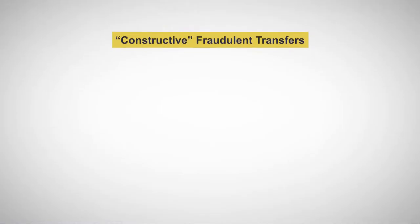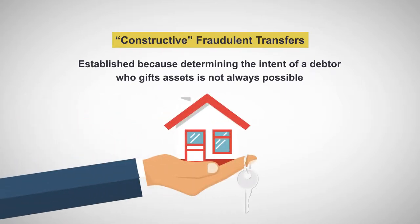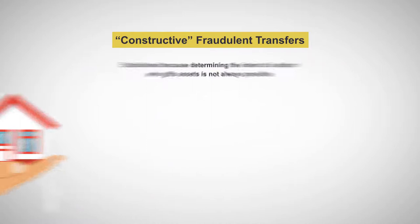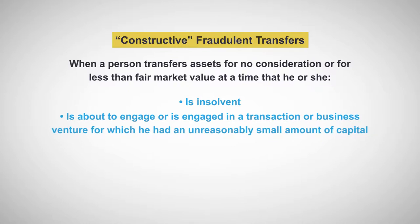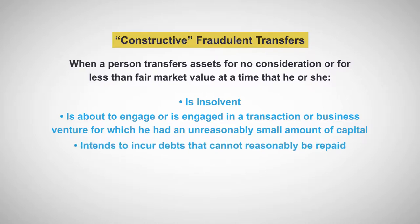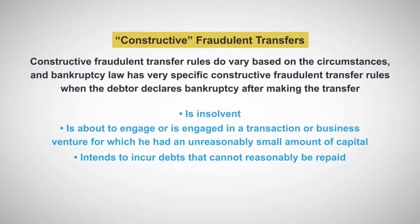Next, let's turn to constructive fraudulent transfers. The constructive fraudulent transfers rule was established because determining the intent of a debtor who gifts assets away is not always possible. A constructive fraudulent transfer occurs when a person transfers assets for no consideration or for less than fair market value at a time that he or she is insolvent, or is about to engage or is engaged in a transaction or business venture for which he had an unreasonably small amount of capital, or intends to incur debts that cannot reasonably be repaid. These general principles apply to all constructive fraudulent transfers, though bankruptcy law has very specific rules when the debtor declares bankruptcy after making the transfer.